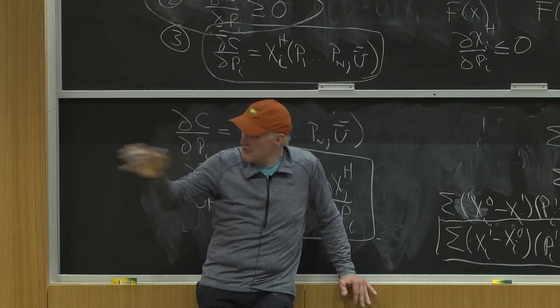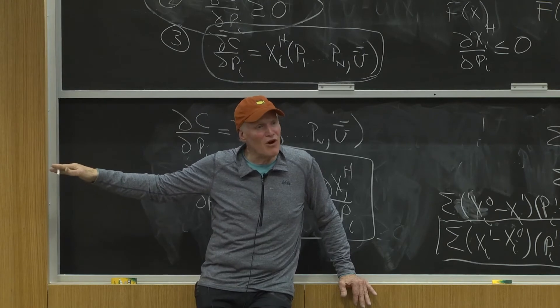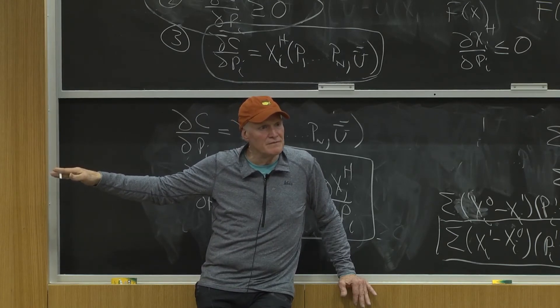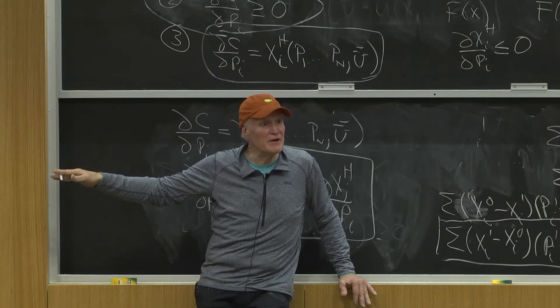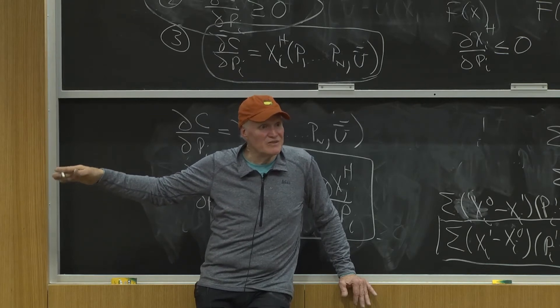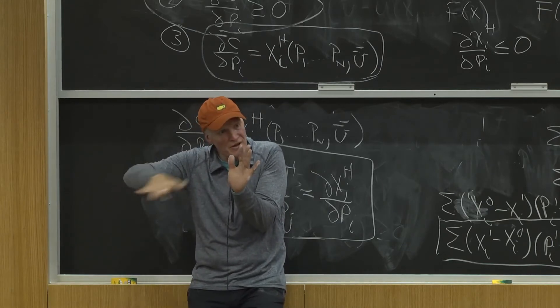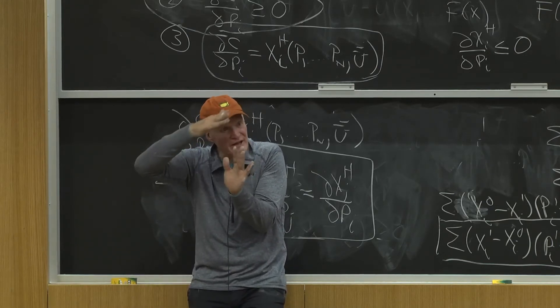Now, when the indifference curves are really curved, what's my cost function going to look like? It's going to be straighter, exactly. So they're inversely related. When the indifference curves are really curved, the cost function is closer to linear.